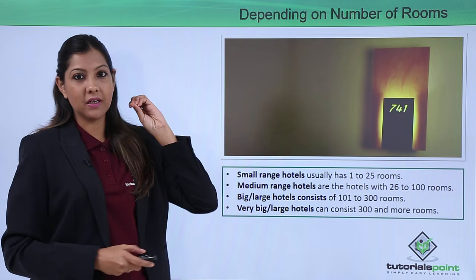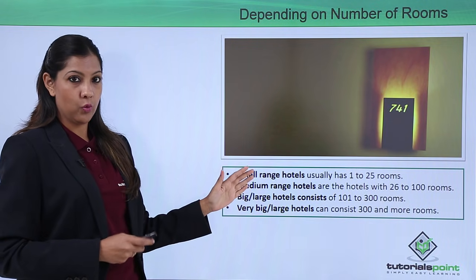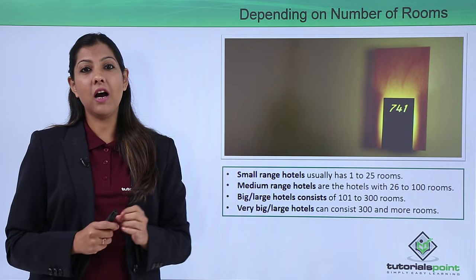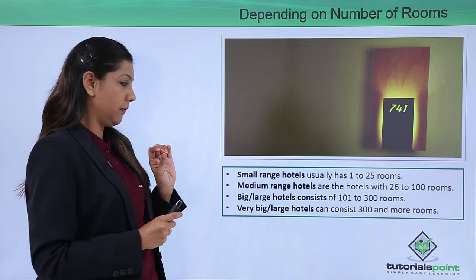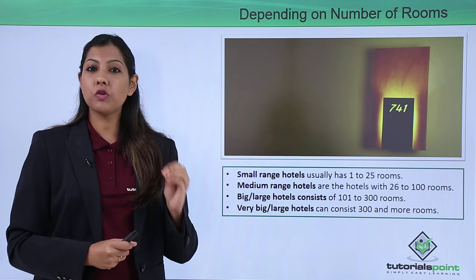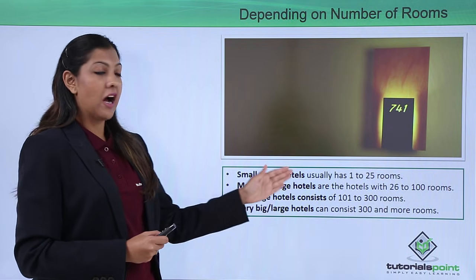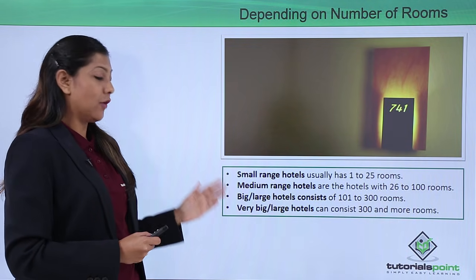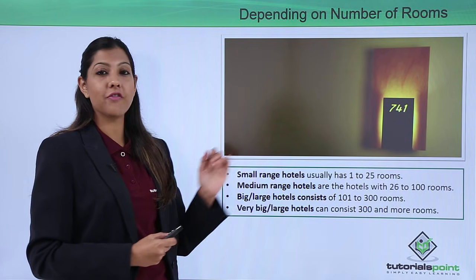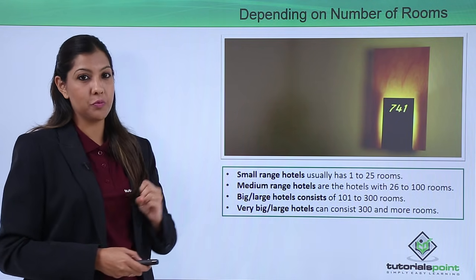Looking at the number of rooms classification: small-range hotels have 1 to 25 rooms; medium-range hotels have around 26 to 100 rooms; large hotels consist of 101 to 300 rooms; and very large hotels or resorts have 300 rooms and above. These are the classifications of hotels based on number of rooms.